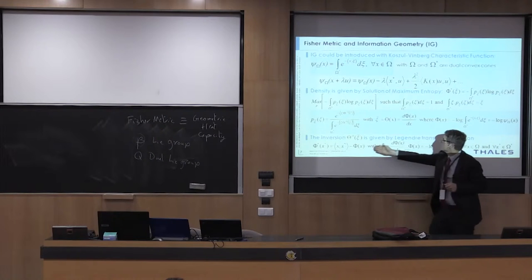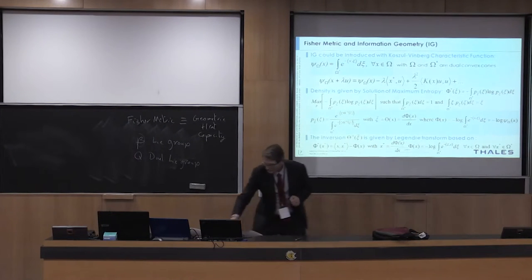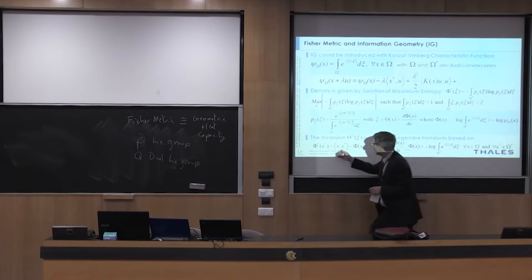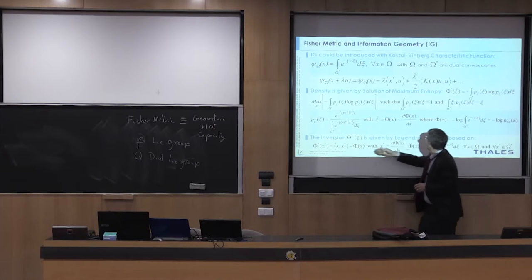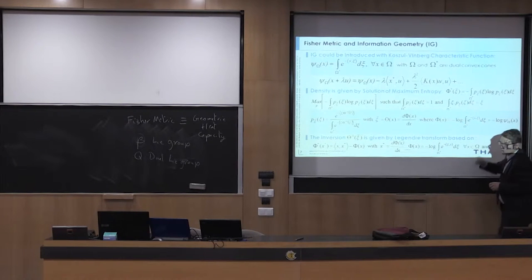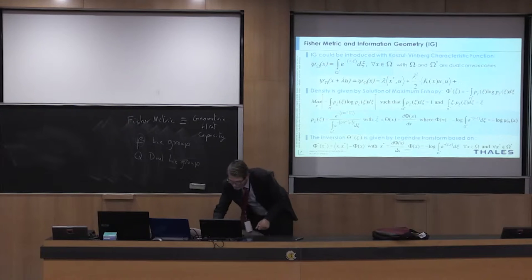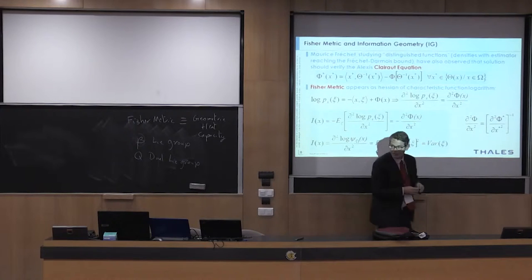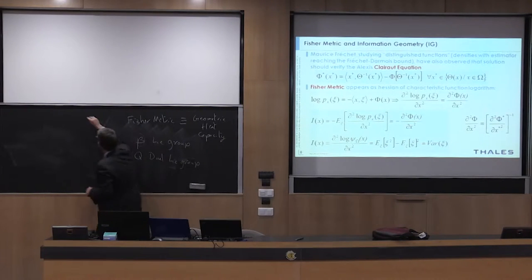To invert this function, you use the Legendre transform. The Legendre transform inverts this function. You have the relation that the entropy is the Legendre transform of the minus log of the characteristic function. You could find this relation also in Fréchet, in the Fréchet paper of 1923.